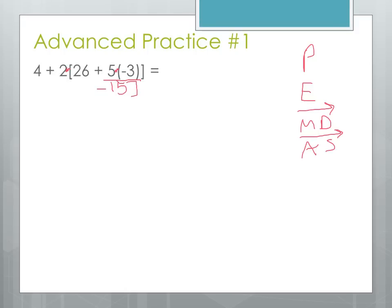And then we have to copy down everything else we haven't used. Now, we're still working in this set of brackets. We have a subtraction problem that we're going to have to do next. The 26 minus the 15. That's going to be our next step. 26 minus 15 is going to be 11. And since we've got it all down to a number, we don't need to write the brackets now. So now we have 11 times 2, and still that plus 4 out in front.